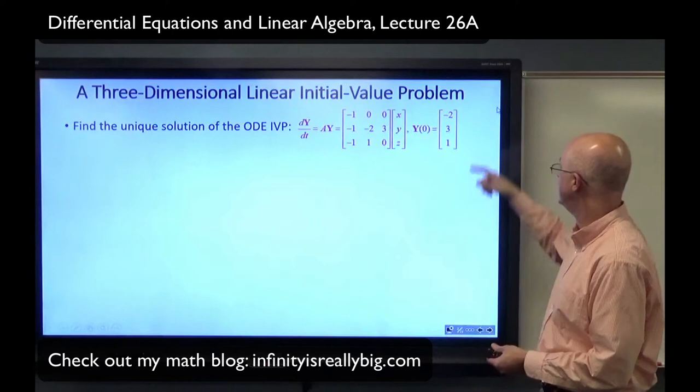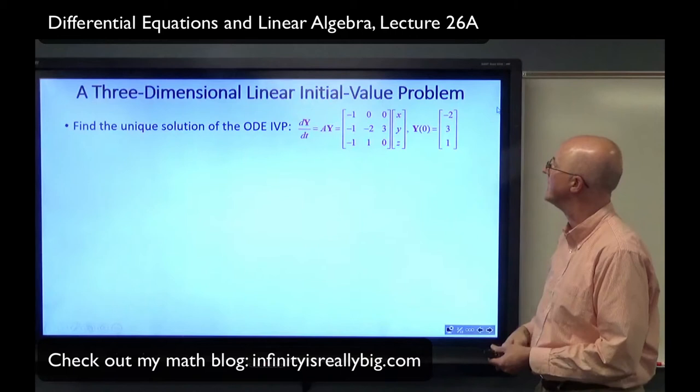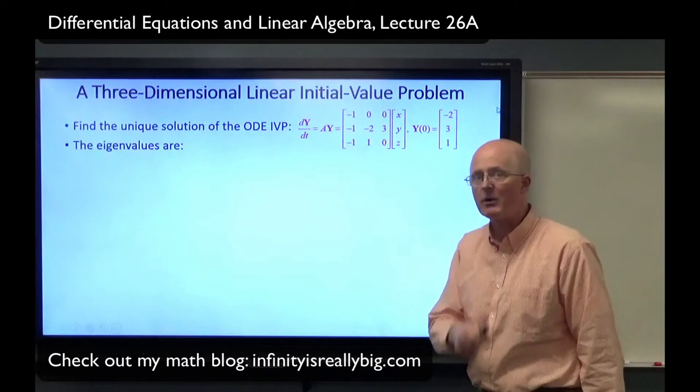The bold-face vector y is assumed to be a three-dimensional vector whose components are little x, little y, and little z. We have an initial condition — a three-dimensional initial condition: bold-face vector y(0) equals negative 2, 3, and 1. That's the linear initial value problem I'd like to solve.